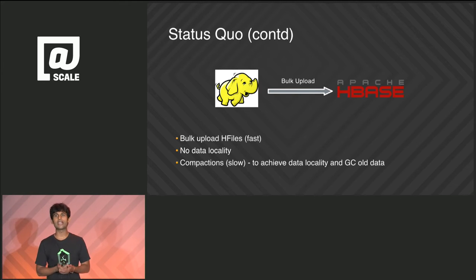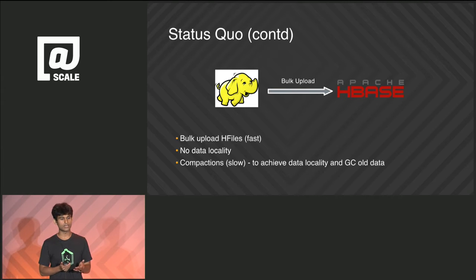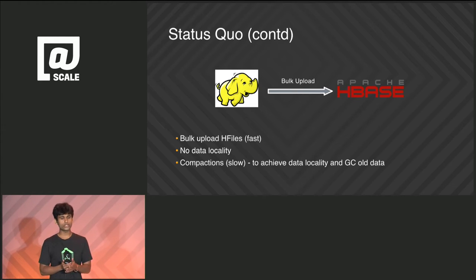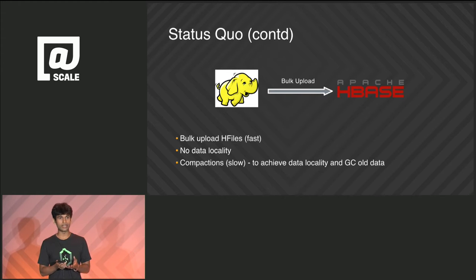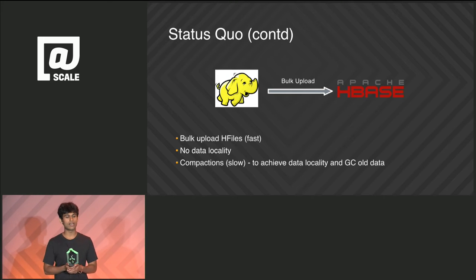We then tried the other approach: generating HBase HFiles and bulk uploading them to HBase. This was significantly faster since all it involved was file copying. But we lost data locality — when a MapReduce job writes data to HBase, it distributes the data across the entire cluster, so latency suffered. The only way to restore data locality was to run compactions, which added even more load to the cluster than the bulk upload itself. As the number of use cases increased, the HBase cluster was doing compactions most of the time.